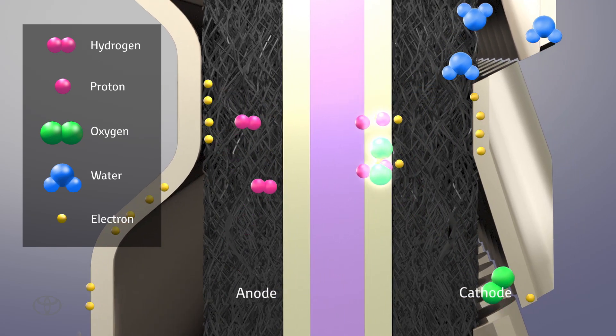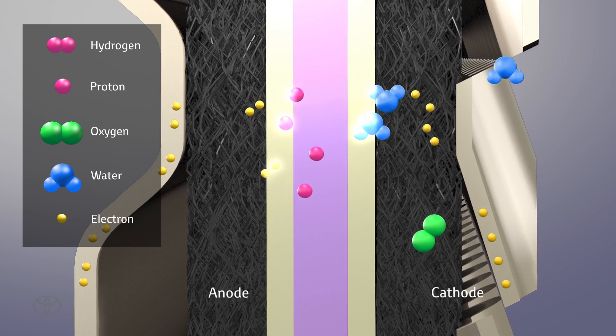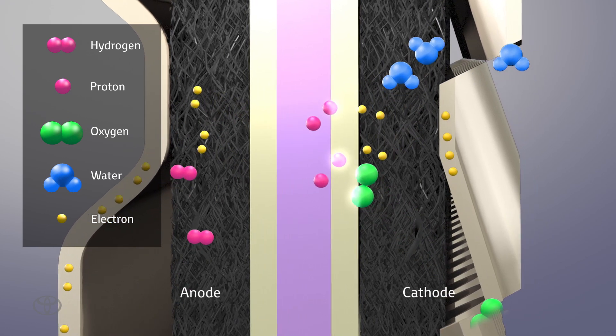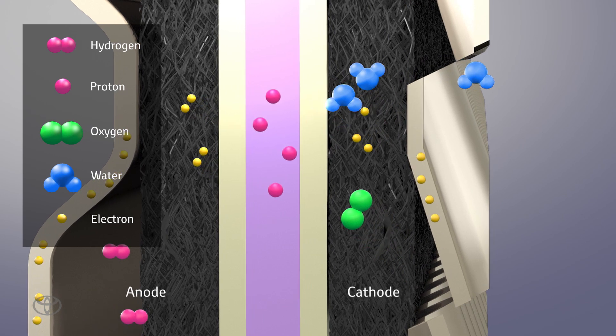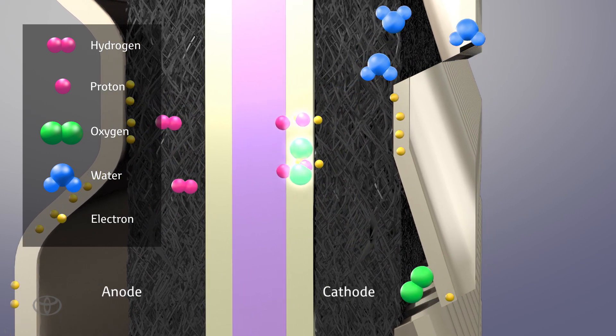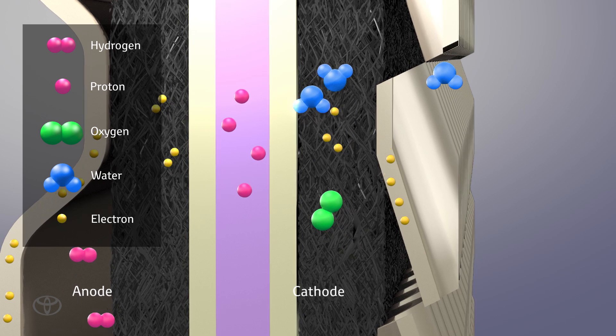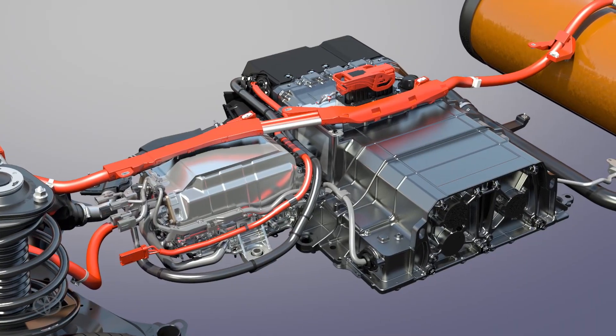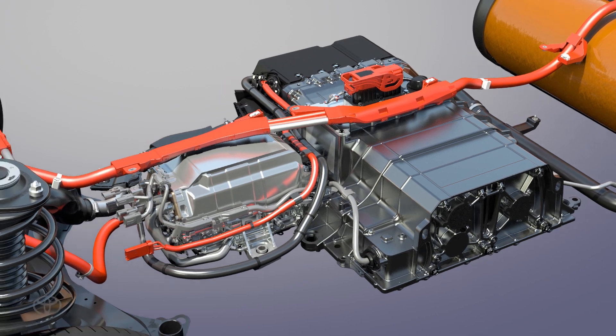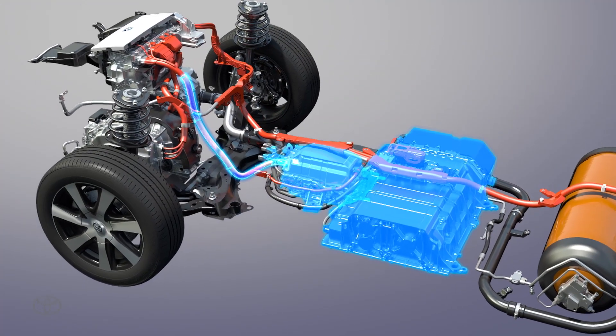Hydrogen supplied to the cells have their electrons removed at the catalyst layer and become protons. Oxygen taken from the air bonds with electrons and protons transferred through the electrolyte membrane to produce water. The flow of electrons released from this reaction becomes the electricity that drives the vehicle's motor.